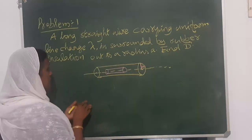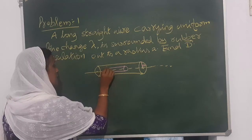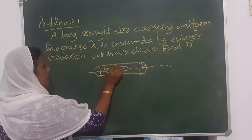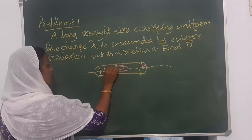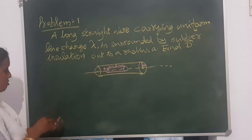And this Gaussian cylinder has radius S and length L. So assume a Gaussian cylinder.